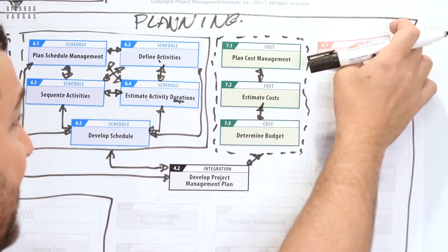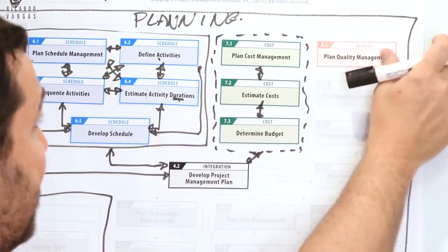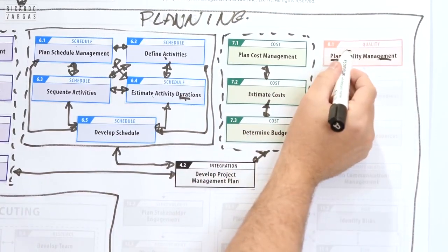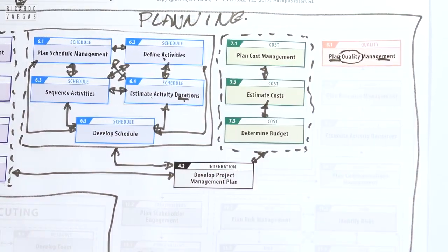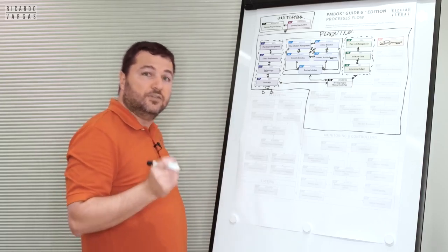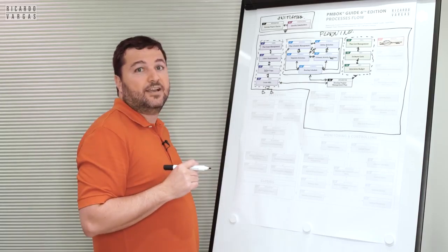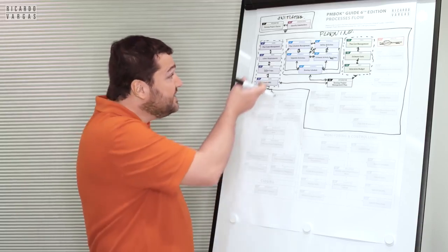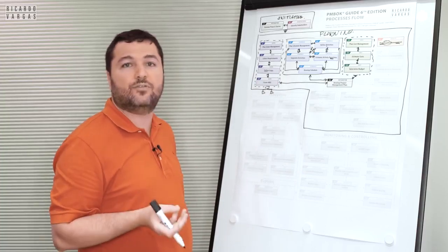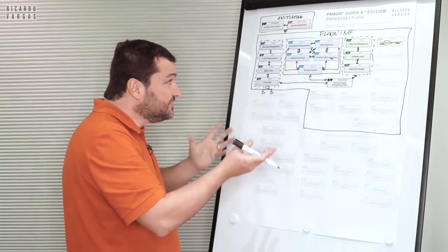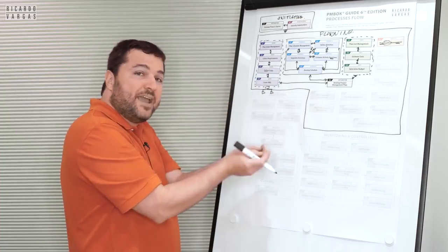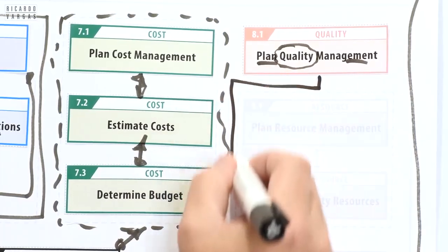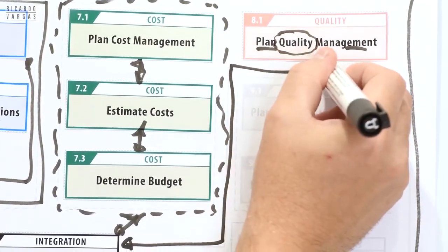After that I need to plan quality management. Again, 'plan management' means the rules of the game. Here I want to know which quality standards I need to comply with, what quality means on this project context, and what I expect to be delivered in terms of quality. This also becomes part of my project plan.